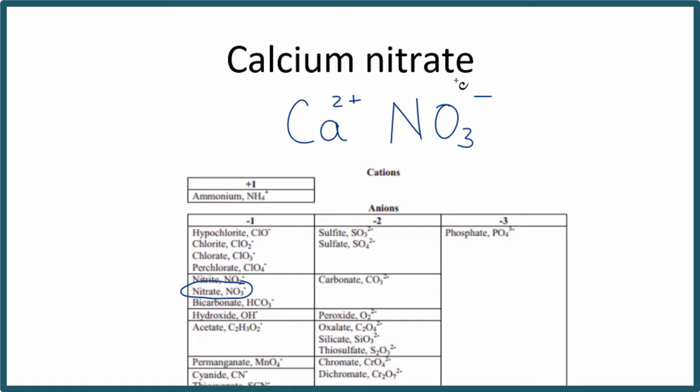So now we have the charge. And this minus applies to the whole NO3. We can just do the crisscross method. So we take the 2-plus, we move it down here. And this is actually a 1-minus. They don't always write the 1 after that. So we'll say 1-minus. And then we can move that down here.